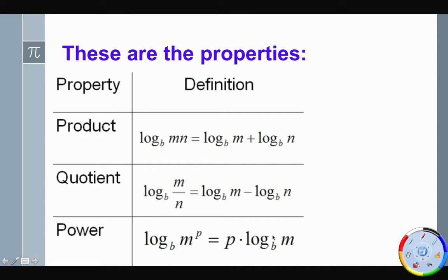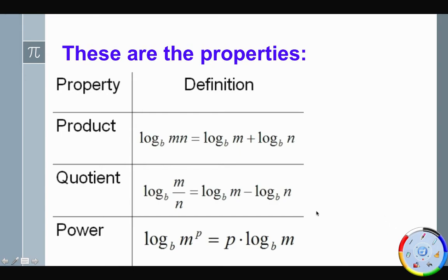The power property says that if I have an exponent on the argument of the logarithm, I can bring that exponent out to the front. So log base two of x to the third power can be written as three times log base two of x. And again, because equality is transitive, if I had two log base ten of y, I could write this as log base ten of y squared — the number in front becomes an exponent.